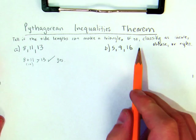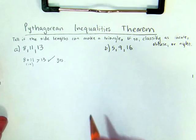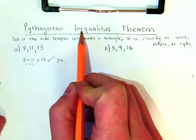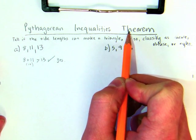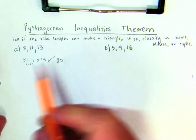So now I need to classify it as acute, obtuse, or right. In order to do that, here comes the Pythagorean inequalities theorem, which tells me that if I square each of the side lengths, I'll be able to tell something about the triangle.